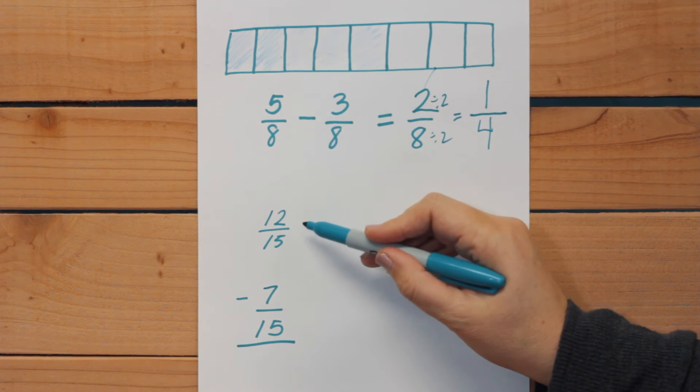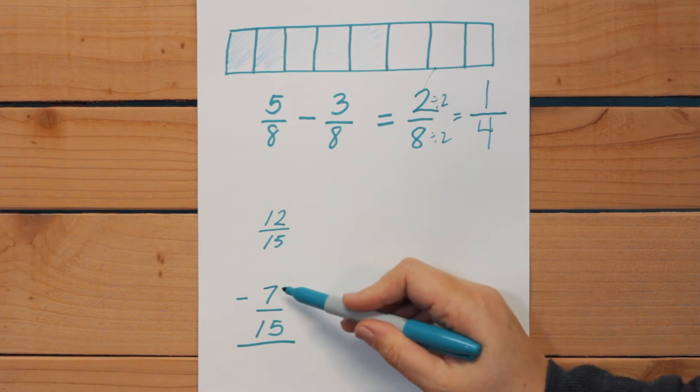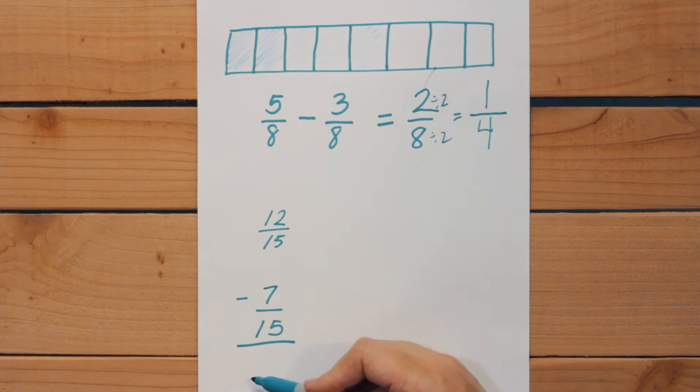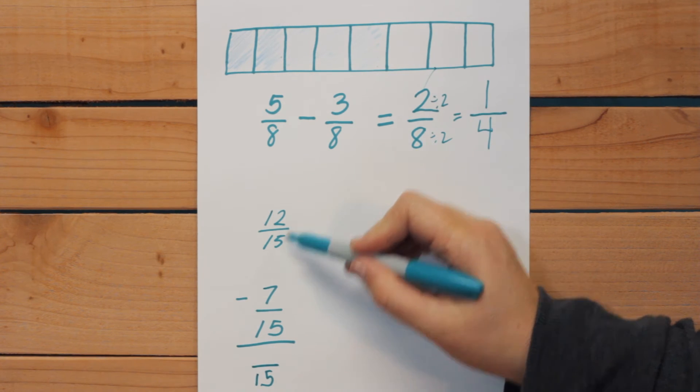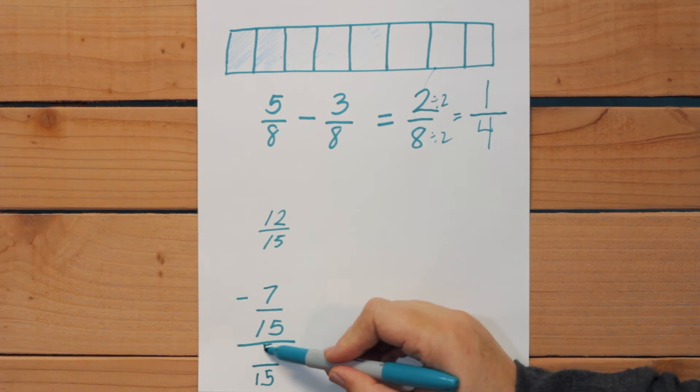So now let's really go to this problem. We have 12/15 minus 7/15. Well we know 15 stays the same. It doesn't change parts, only the shaded parts change. I had 12 minus 7 equals 5.